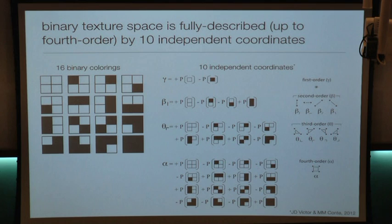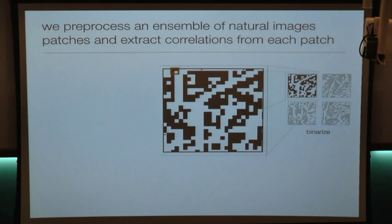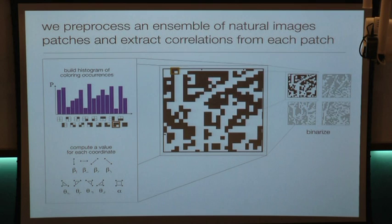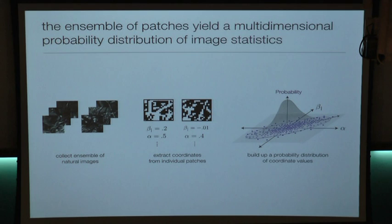With a set of binarized patches, I can return coordinate values for each patch by scanning over it with my window and counting the number of times I measure each of the 16 colorings, from which I compute values for the nine coordinate values. This gives a vector that parameterizes the correlations found in an image patch. We do this over our ensemble of over 700 images — each image is divided into patches, each patch is assigned coordinate values, and when we collect coordinate values across this ensemble we build up a probability distribution of coordinate values.